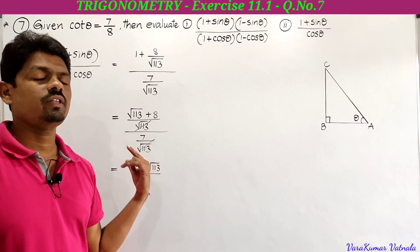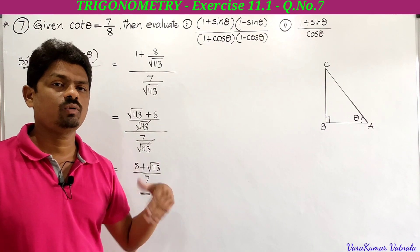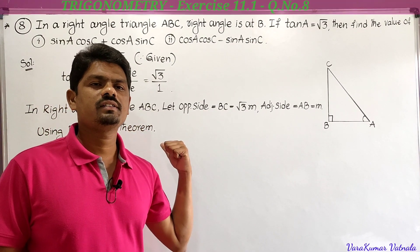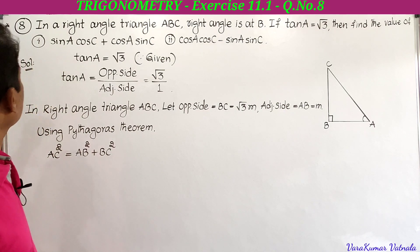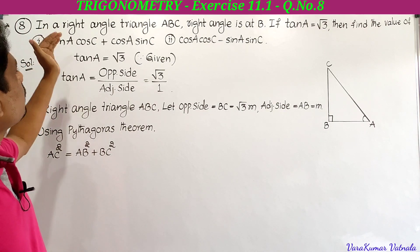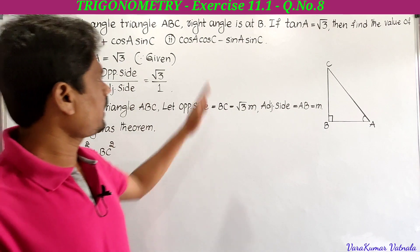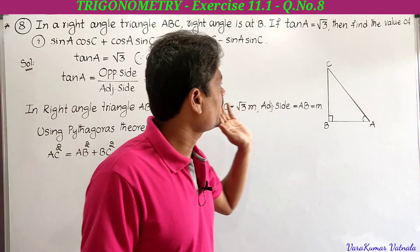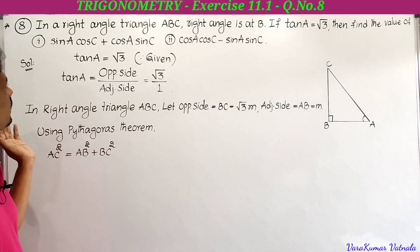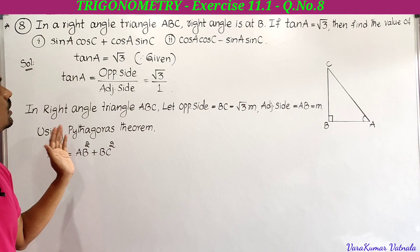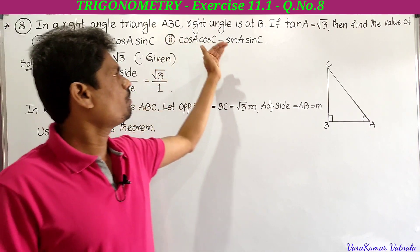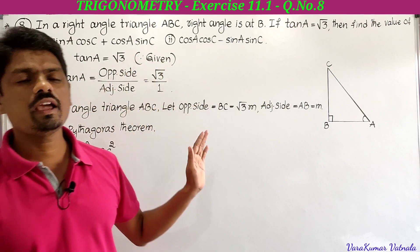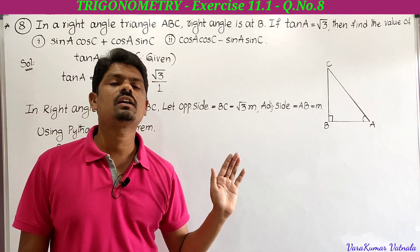This completes Problem 7 in Exercise 11.1. Next is Problem 8 in Exercise 11.1. In a right angle triangle ABC, right angle is at B. If tan A equals square root of 3, find the value of: first, sin A cos C plus cos A sin C; and second, cos A cos C minus sin A sin C.